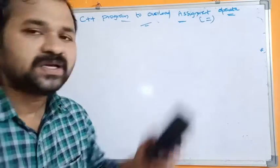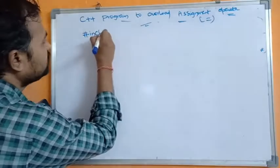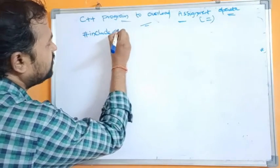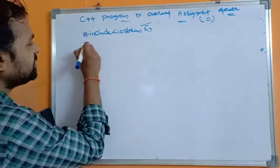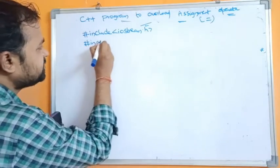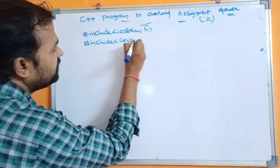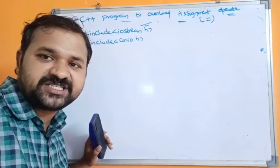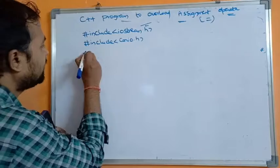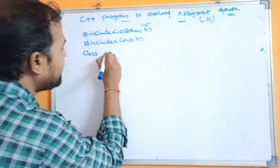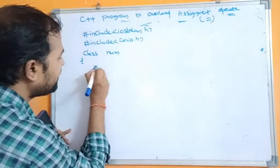Now let's see the program. The first statement is #include <iostream.h> because in this program we are using cout and cin objects, and those two objects are present in the iostream header file. Next statement is #include <conio.h> because in this program we are using getch and clrscr functions, which are present in the conio header file.